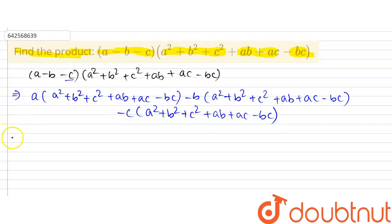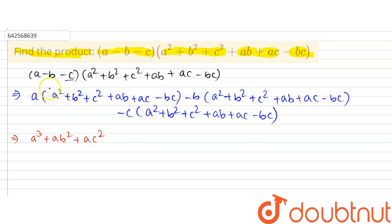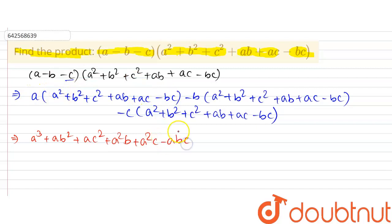When we multiply 'a' with the expression: a into a square equals a cube, a into b square equals ab square, a into c square equals ac square, a multiplied with ab equals a square b, a with ac equals a square c, and a into minus bc equals minus abc.